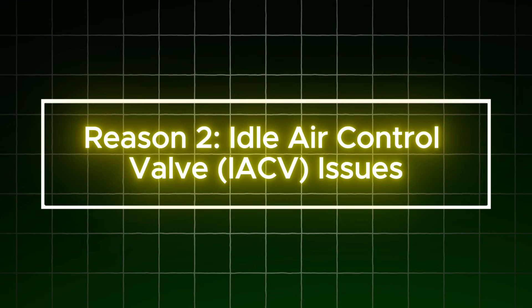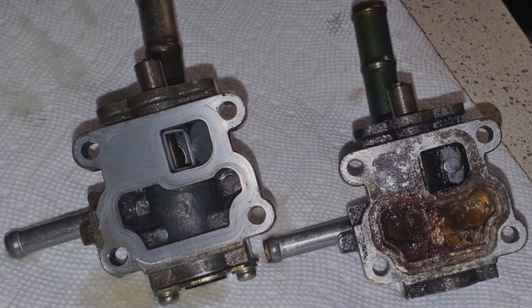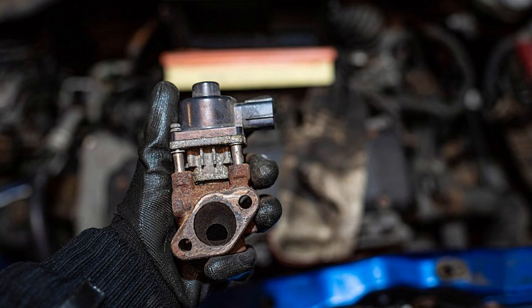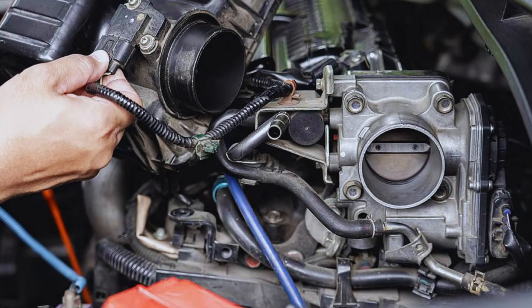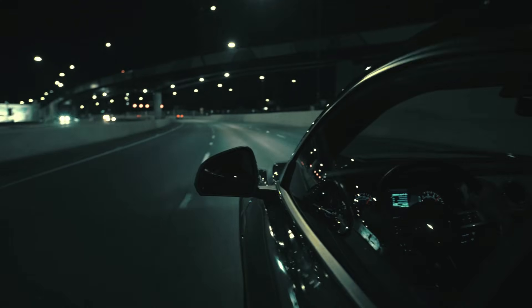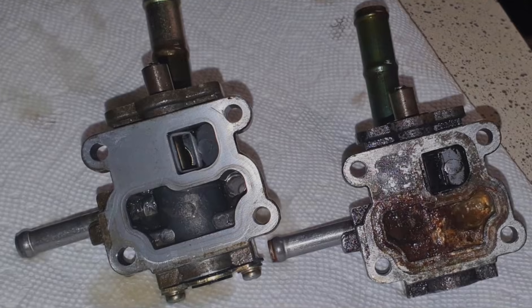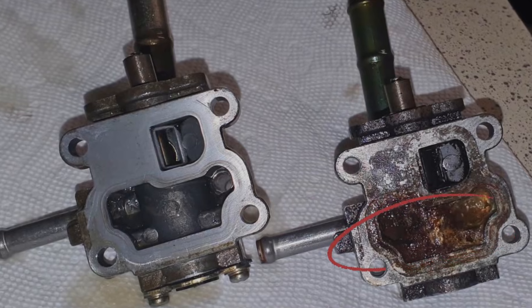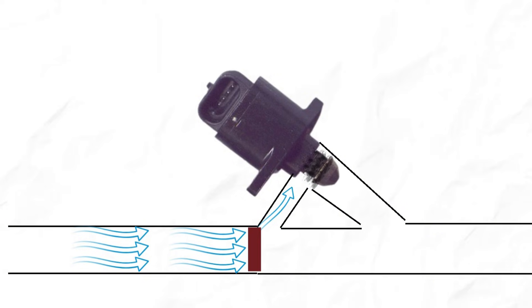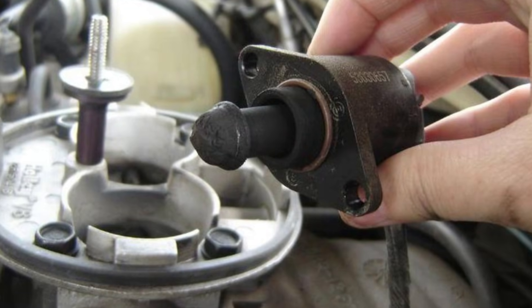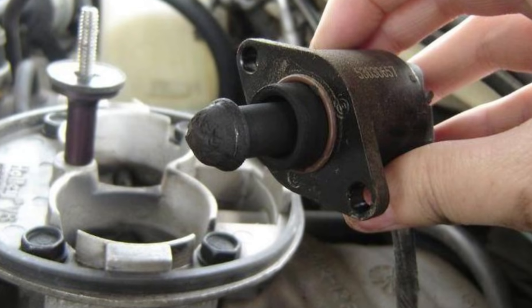Reason 2: Idle air control valve (IACV) issues. One common culprit behind erratic idle behaviour is a malfunctioning idle air control valve. This valve is responsible for bypassing air around the closed throttle body when your engine is idling and your vehicle is stopped, ensuring that the engine receives just the right amount of air for smooth operation. Over time, the IACV can become clogged with oil and carbon deposits, causing it to stick either open or closed. When the valve remains open, it allows excessive air to enter the engine, disrupting the delicate 14.7:1 air-to-fuel ratio necessary for efficient combustion. This imbalance forces the ECU to miscalculate fuel delivery, resulting in unstable RPM fluctuations.